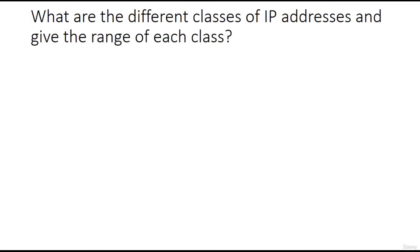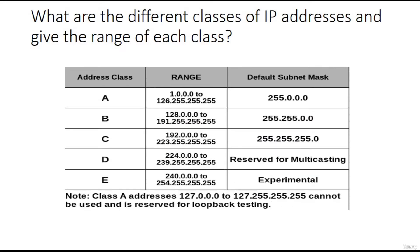What are the different classes of IP addresses and their ranges? There are five classes: A, B, C, D, and E. Class A ranges up to 126, and class B starts at 128. You might notice 127 is missing — the 127 series is reserved by IANA for loopback testing purposes.